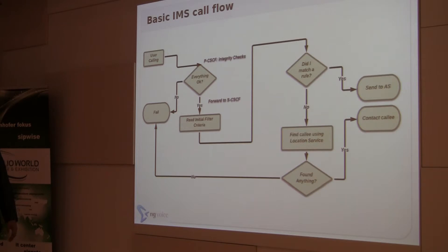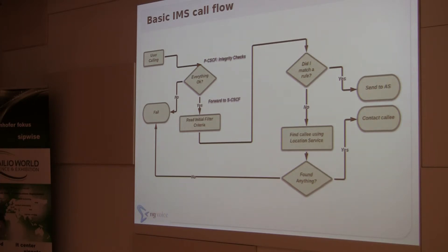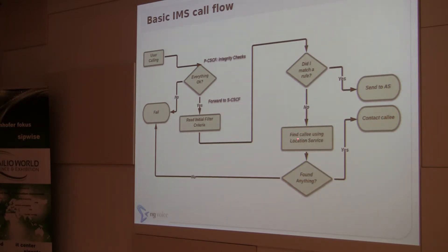This is the basic IMS call flow. When the user makes a call, it reaches the P-CSCF. After integrity checks, it is forwarded to the S-CSCF — you don't need to go back to the I-CSCF since this is call initiation. The S-CSCF reads the Initial Filter Criteria; if our rule matches, it sends the call to the application server. Otherwise, it tries to identify if the user intends to call another user, sends a location request to the HSS, and either forwards the call or returns a failure to the user agent.